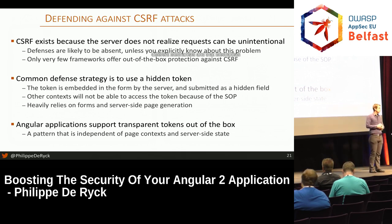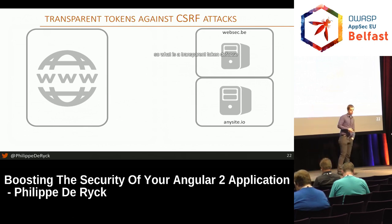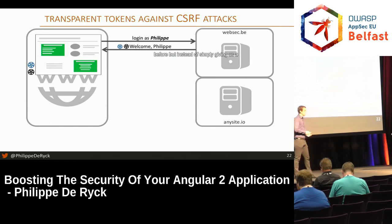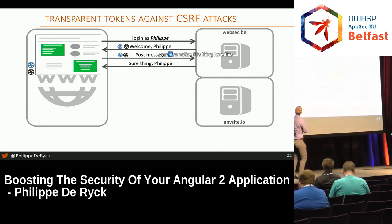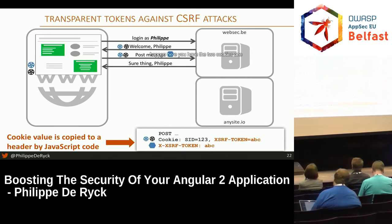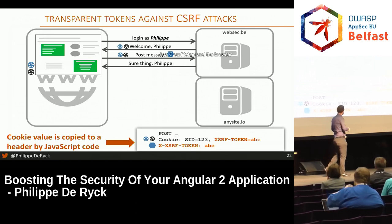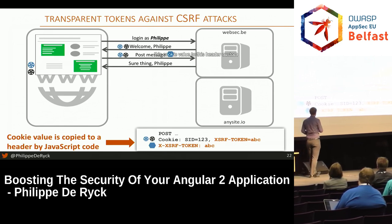Angular applications support a different mechanism called transparent tokens — also called double cookies. When you log in, instead of just a session cookie you also get a second CSRF token cookie stored in the browser. Whenever a request is made, Angular copies that cookie value to a custom request header. Another context can make the request and the cookies will be there, but it will never be able to read the CSRF token cookie from a different origin — so it cannot copy the value to the header.